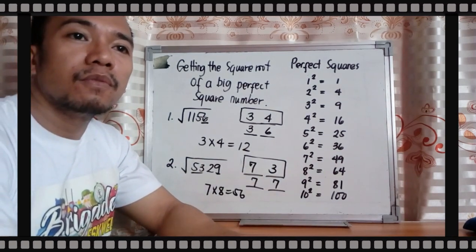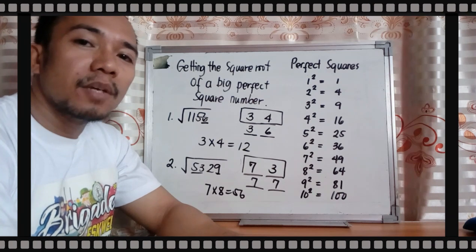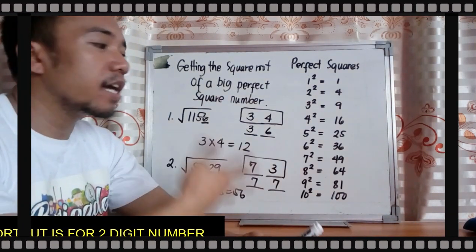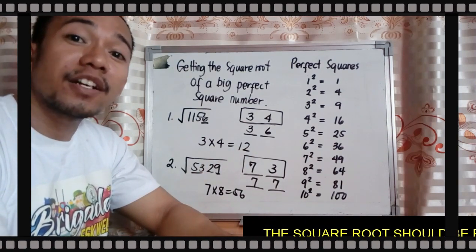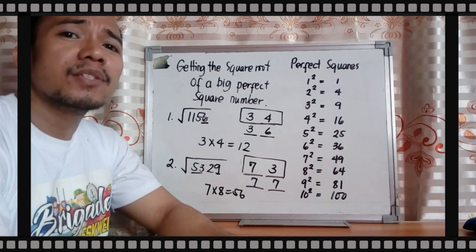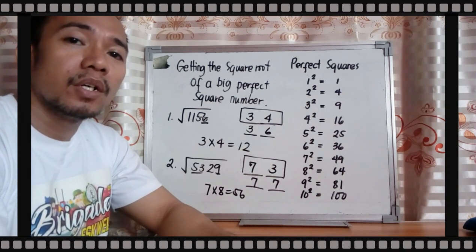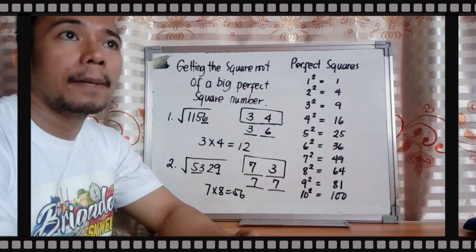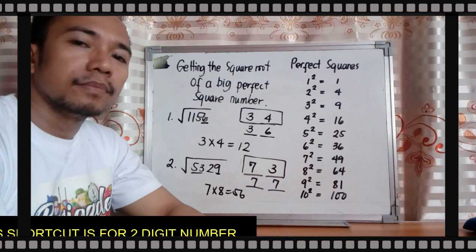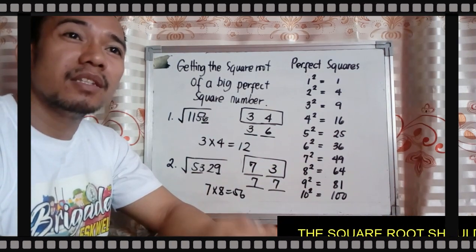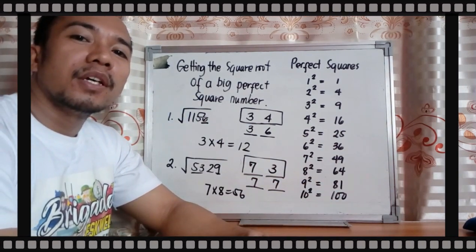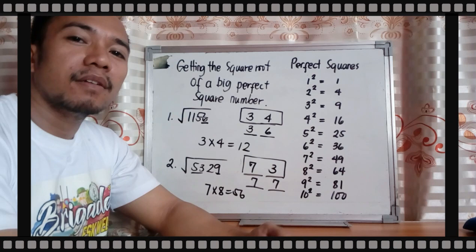It will be difficult on your first try, but once you practice again and again, within three seconds you can find the square root of a big perfect square number. If it is a three-digit root, you need to extend this method. That's all — I hope you learned something new today!